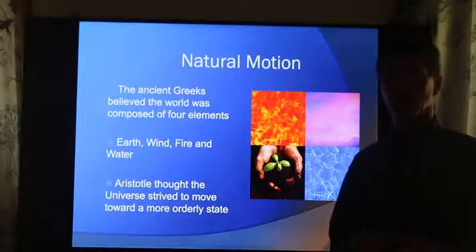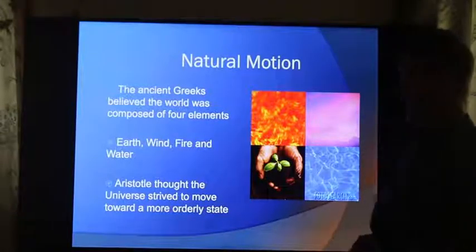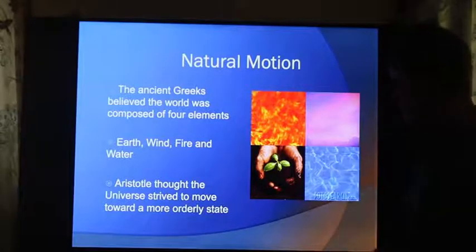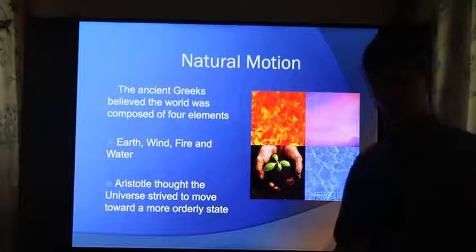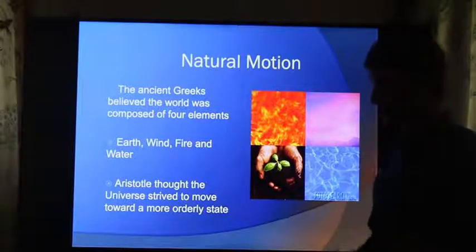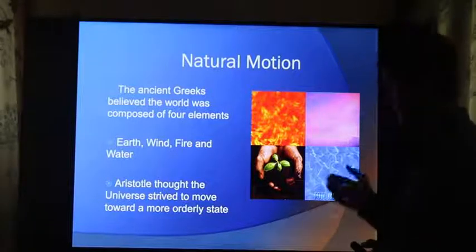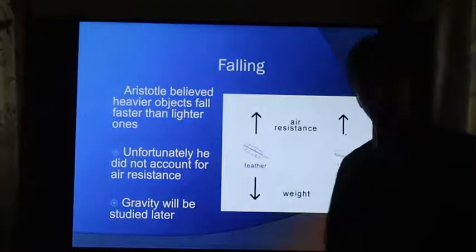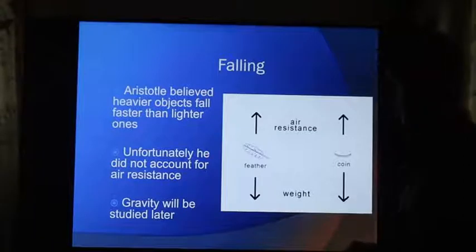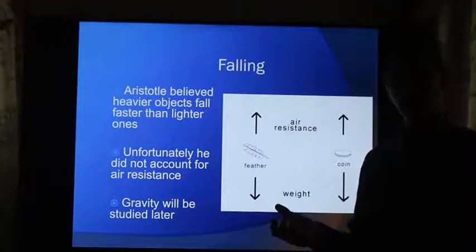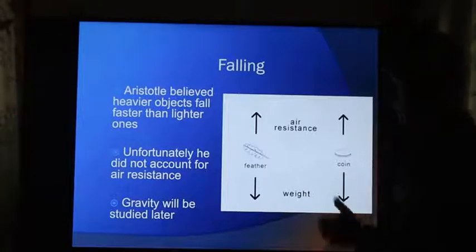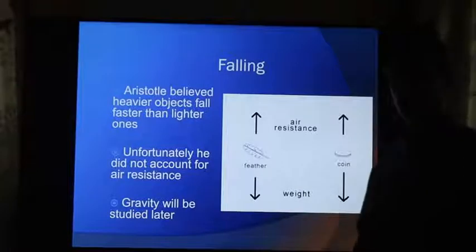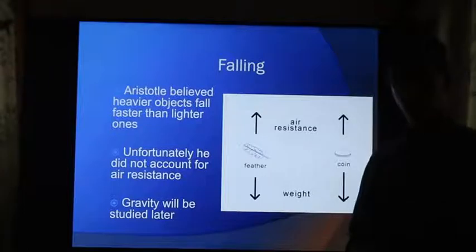He also believed, like many of the ancient Greeks, that there were fundamental elements of nature through which all other objects could be created: fire, air, earth, and water, and that everything around us was some combination of each. Things would tend to go to their natural place in the universe. Thus, things made mostly out of earth would fall to earth. Things mostly made out of water would flow to the oceans. Things made mostly out of the air would rise up into the atmosphere. This allowed him to reason why a coin would fall faster than a feather. A coin would be made mostly out of earth, whereas a feather might have been reasoned to be made somewhat of earth and somewhat of air.